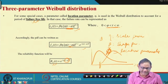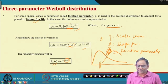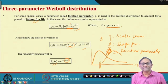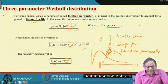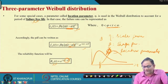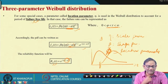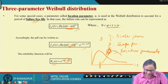Most of the time we consider γ = 0 and use the two-parameter model. But there are situations where a failure-free life must be considered, and an appropriate γ value is chosen. Given data, you can use parameter estimation methodology to determine whether a three-parameter or two-parameter model is appropriate.